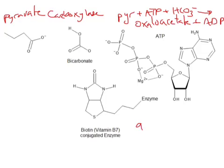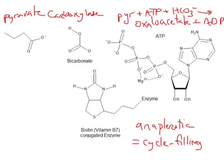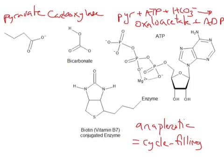This is a good example of an anaplerotic reaction — 'anaplerotic' means cycle-filling. Cycle-filling reactions are used to refill the Krebs cycle if you start to use oxaloacetate for different things. For example, you can use oxaloacetate to make aspartic acid if you want to make amino acids. So you take pyruvates ready to enter the Krebs cycle and run the carboxylase reaction to get more oxaloacetate. This is our first example of an anaplerotic reaction, and you'll see these all over the place as we get into the Krebs cycle.